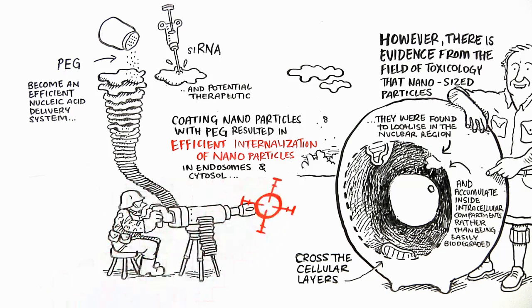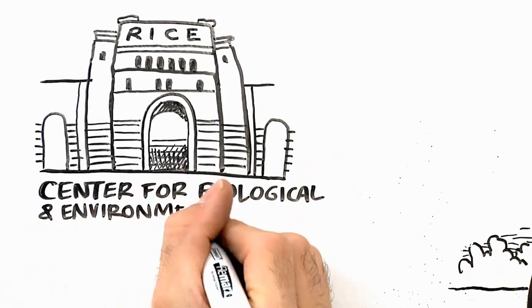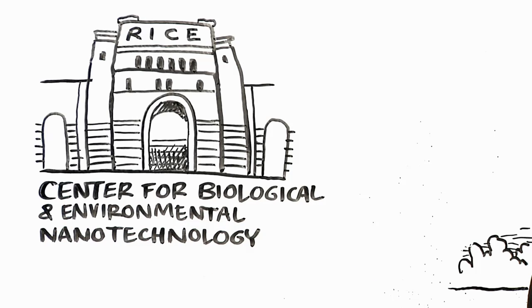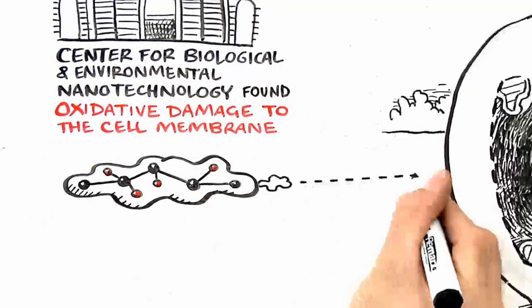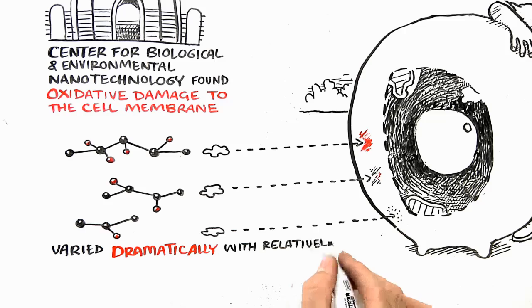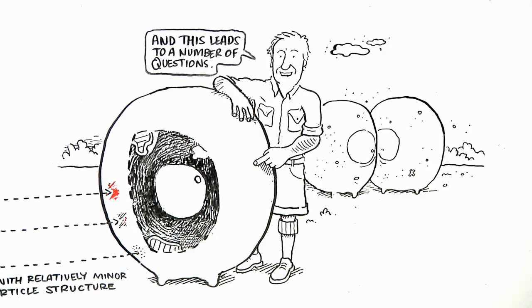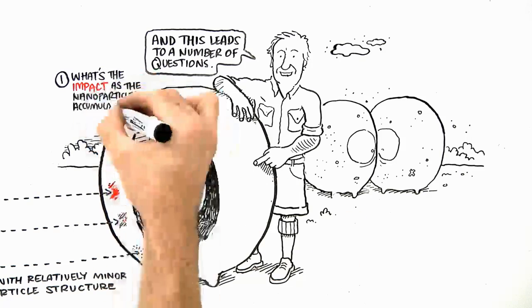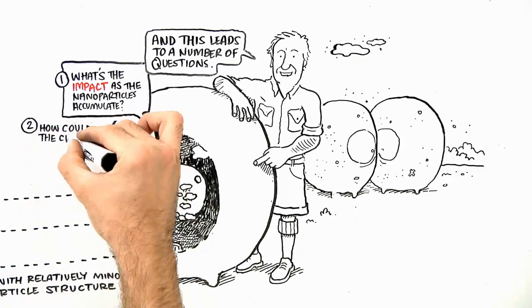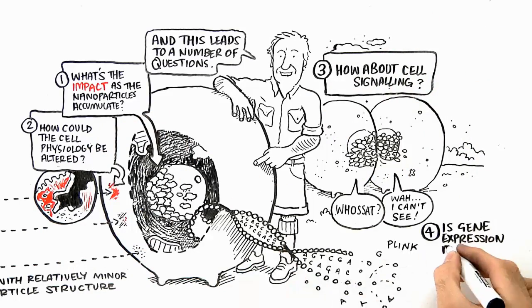Indeed, the coating of nanoparticles can be utilized for targeting. However, researchers at the Center for Biological and Environmental Nanotechnology at Rice University have found that oxidative damage to cell membrane varied dramatically with relatively minor changes to nanoparticle structure. And this leads to a number of questions. What's the impact if nanoparticles accumulate? How would cell physiology be altered? How about cell signaling? Is gene expression affected?